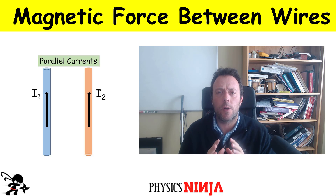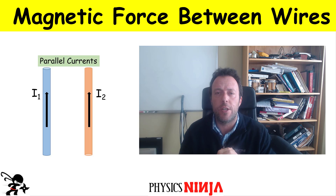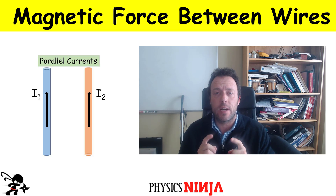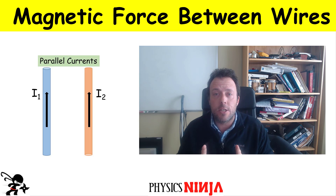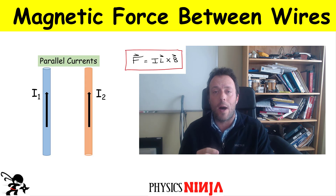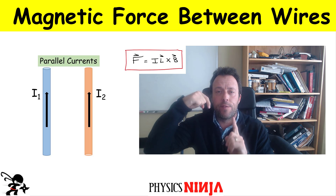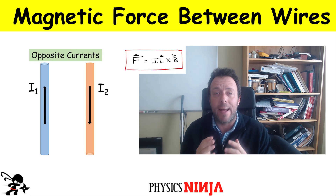Hi everybody, Physics Ninja. Today I want to look at how you calculate the magnetic force when you have two currents next to each other. There are two situations to consider. The first is when currents are parallel to one another — how do you apply the force equation to calculate the direction and magnitude of the force of one wire acting on the other? In the second case, I'm going to flip one of those currents so the currents are anti-parallel.